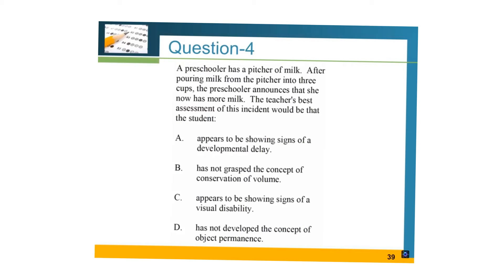Question number four: a preschooler has a pitcher of milk. After pouring milk from the pitcher into three cups, the preschooler announces that she now has more milk. The teacher's best assessment of this incident would be that the student: A) appears to be showing signs of a developmental delay; B) has not grasped the concept of conservation of volume; C) appears to be showing signs of a visual disability; D) has not developed the concept of object permanence. In this question we have a preschooler in the pre-operational stage. This scenario is about the laws of conservation. Answer A is not correct because if a student were a high schooler, this would indicate developmental delay. Answers C and D have nothing to do with this. The correct answer is B.